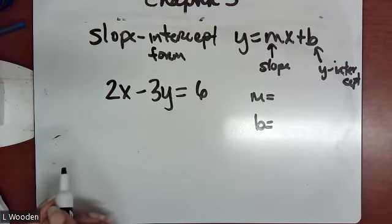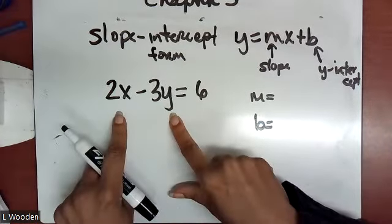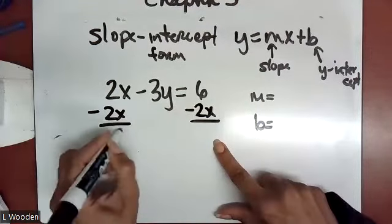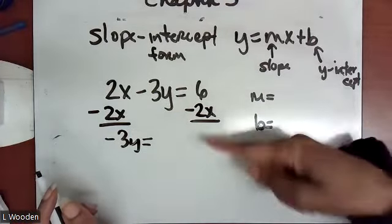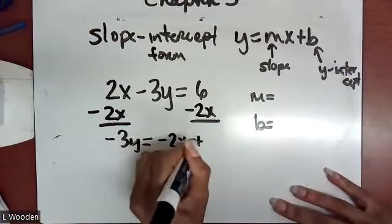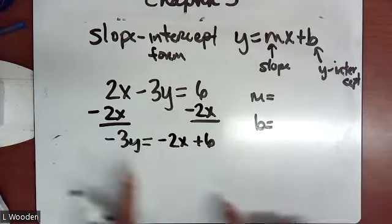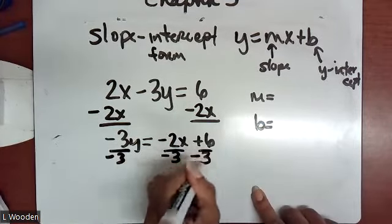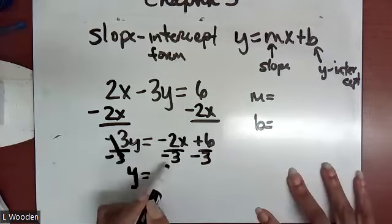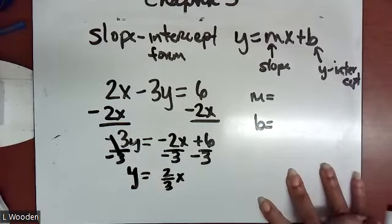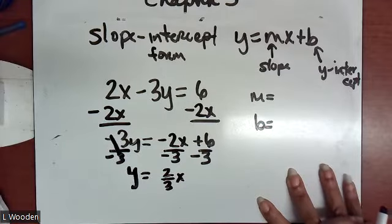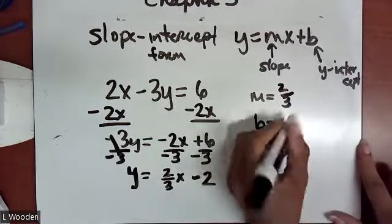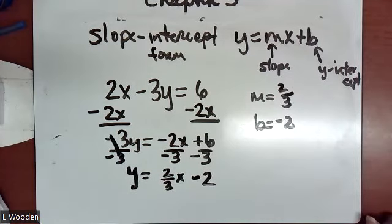To isolate Y in 2X minus 3Y equals 6, subtract 2X from both sides. You cannot combine 2X and 6 — they are not like terms. Now almost in mX plus b form, but Y is not completely isolated. Divide everything by negative 3, dividing each term separately. A negative divided by a negative yields positive: two over three does not reduce, so leave it as two-thirds. No decimals. Then 6 divided by negative 3 is negative 2. So slope is two-thirds and Y intercept is negative 2.